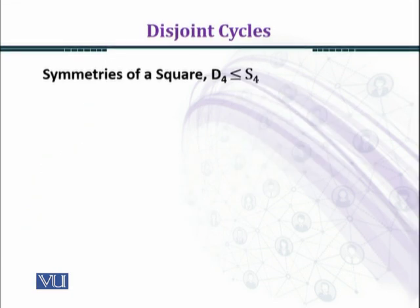Here we are considering an example: symmetries of a square, which is denoted by D4. As we have seen, D4 is a subgroup of the symmetric group S4.